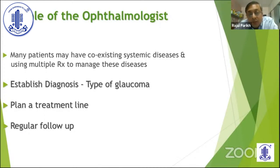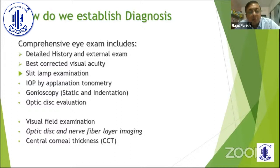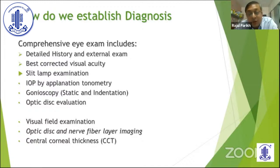We have to keep all this in account when we diagnose glaucoma. What we need to do is have a comprehensive examination. Before we do the slit-lamp examination, we have to have a detailed history and external examination. Then slit-lamp examination, applanation tonometry — and when I say beyond IOP, I never meant that IOP is not part of the examination. IOP is a must. Also: applanation tonometry, gonioscopy, dilated optic disc examination, and if necessary, investigations like perimetry and imaging.